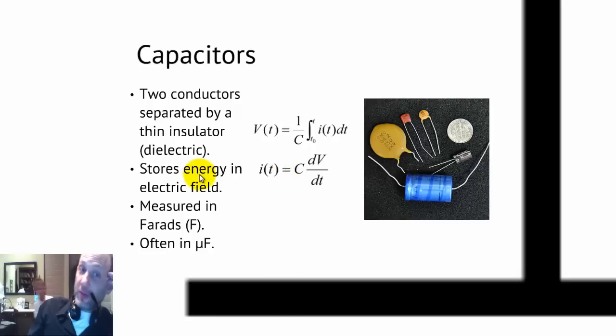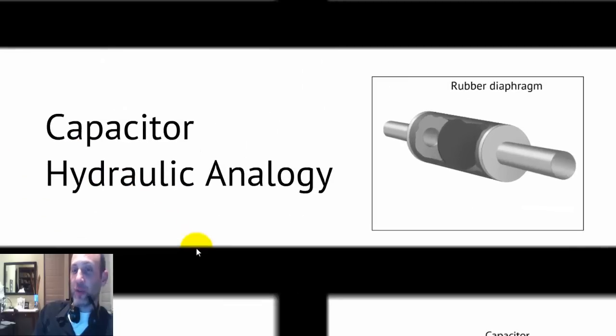A capacitor basically stores energy in an electric field. The equation that governs it is this one here. The current through a capacitor is proportional to the change in voltage across the capacitor, with respect to time, times some proportionality constant, which we call the capacitance. We'll talk about how this plays out in real time in just a little bit. These are measured in farads. Often microfarads because a one farad capacitor would be quite unwieldy. Huge.